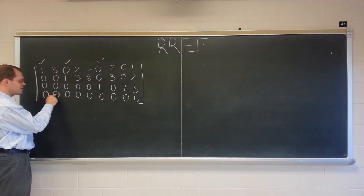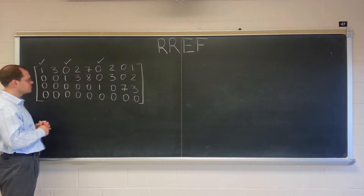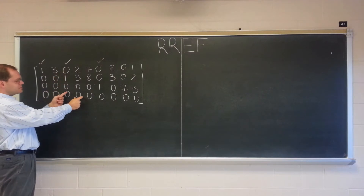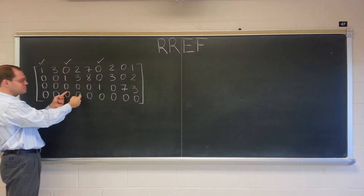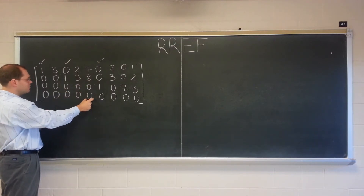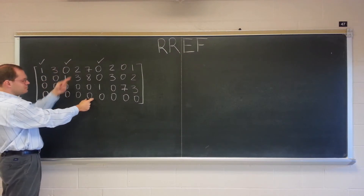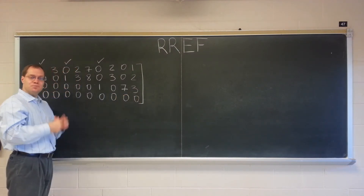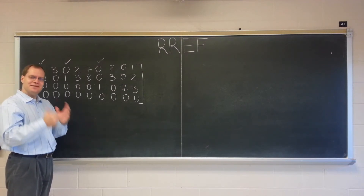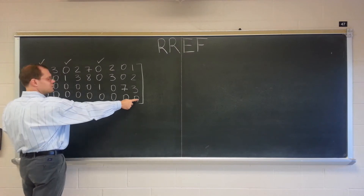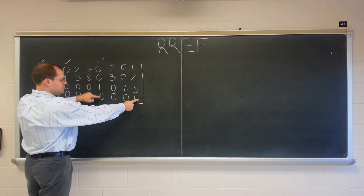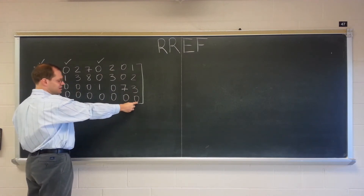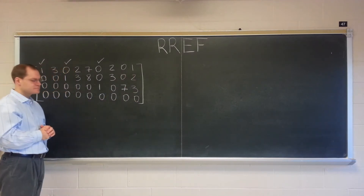For example, three times the first column minus the second is zero. How would we use this column to make a zero column? We would take twice the first column, three times the third — that would give us this column — and then subtract this column. How would we use this fifth column? Seven times the first, eight times the third, minus one times the fifth. For the last column: one of the first column, two of the third, three of the sixth, and minus one of this one — that's because the first three columns combined to give us this column, so when we subtract it we get zero.